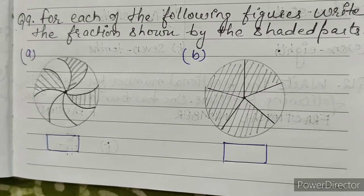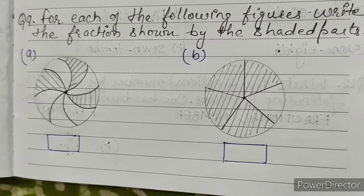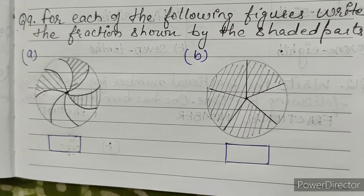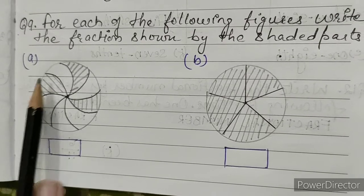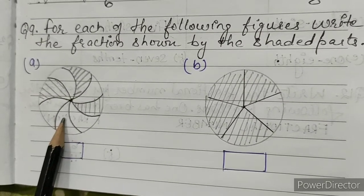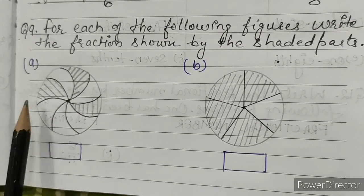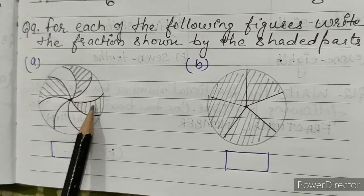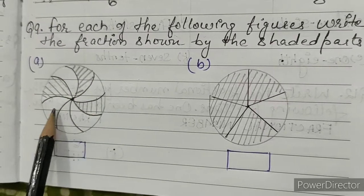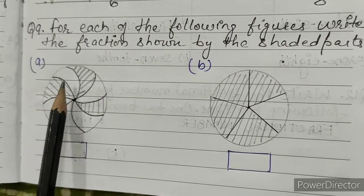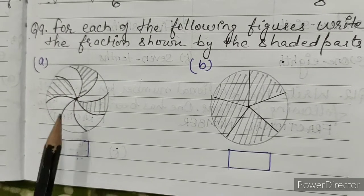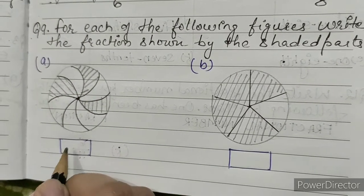Question number 9: for each of the following figures, write the fraction shown by the shaded parts. A: this figure is divided into 8 equal parts — 1, 2, 3, 4, 5, 6, 7, 8. Out of 8 parts, 3 parts are shaded. So our answer will be 3 by 8.